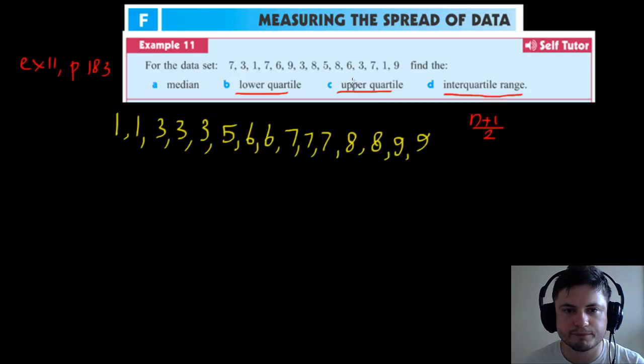us 8. So we're looking at the eighth number: 1, 2, 3, 4, 5, 6, 7, 8, and the actual median is going to be right here. So the median is 6. Now we're going to look for the lower quartile. To find the lower quartile, we basically draw